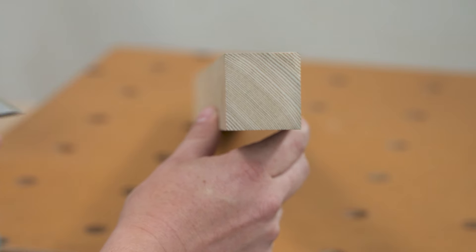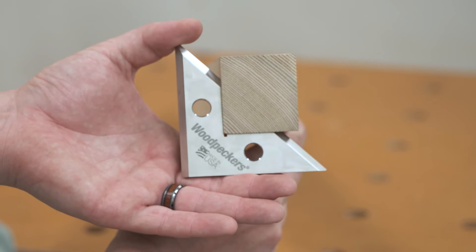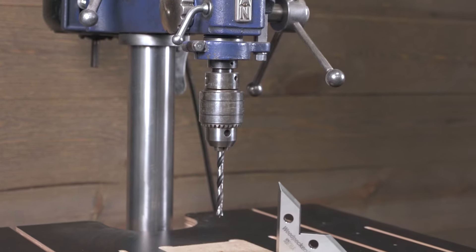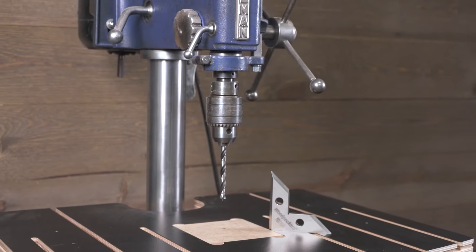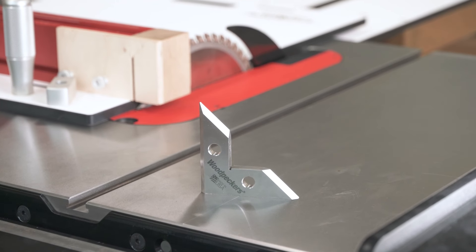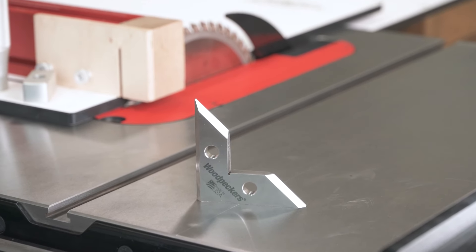Once you're dialed in, cut a test piece and measure against the inside 90 degree reference. Whether you're tuning up an older machine or dialing in new equipment, Deadnuts is the setup tool you need.